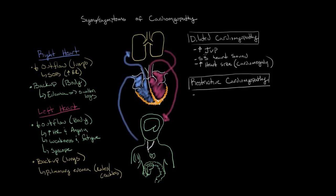There are also a few signs more characteristic of restrictive cardiomyopathy. One is the same increased jugular venous pressure (JVP) seen in dilated cardiomyopathy. Another is the S4 heart sound — whereas in dilated cardiomyopathy the S3 was caused by blood entering a filled chamber, in restrictive cardiomyopathy the S4 is caused by blood entering a chamber that isn't stretchy and won't accommodate blood flow because it's really stiff. This makes a characteristic sound heard with a stethoscope, known as the S4 heart sound.